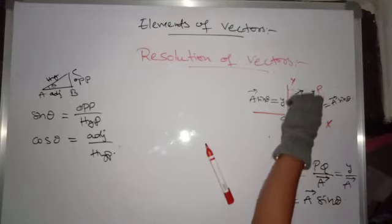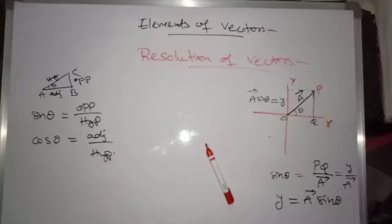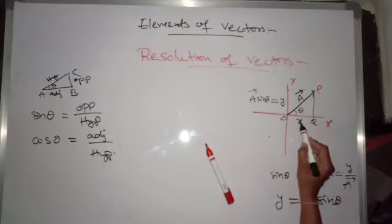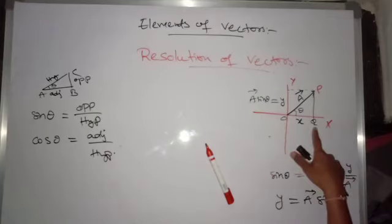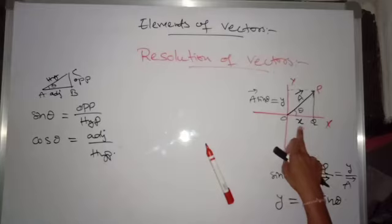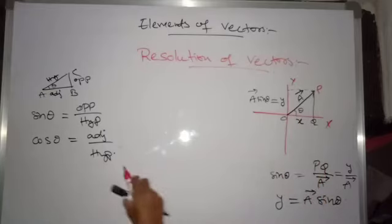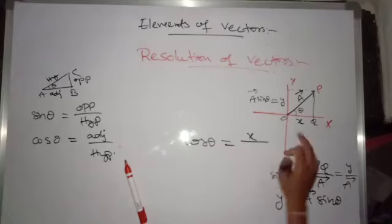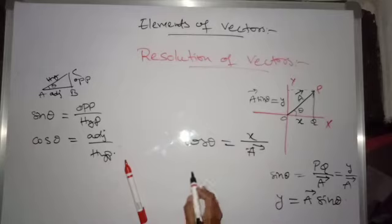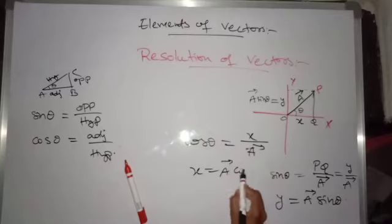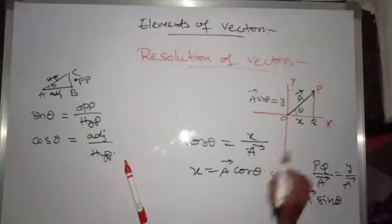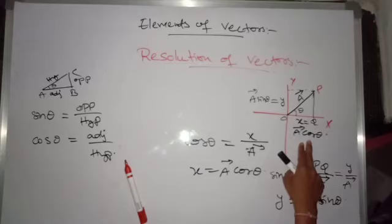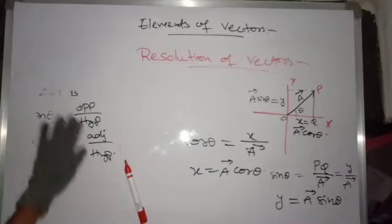The vector A bar is resolved into two components — one is the Y component and the other is the X component. The distance between the origin O and Q is X. From the same triangle, what is cos theta? Cos theta is X by A bar. Therefore, X is equal to A bar into cos theta. So the X component is A bar cos theta.